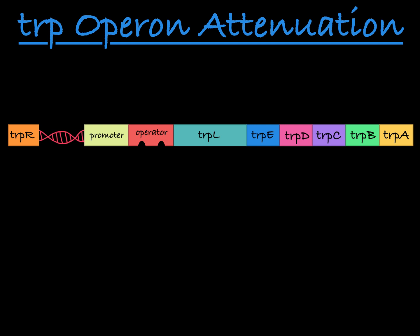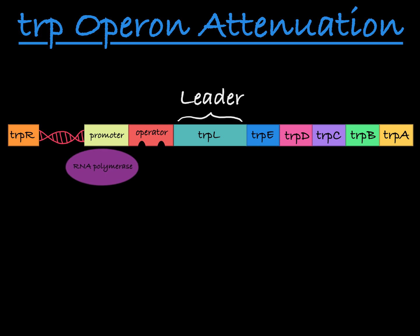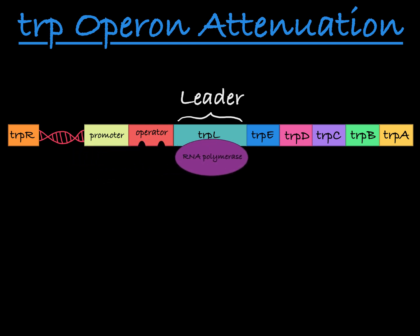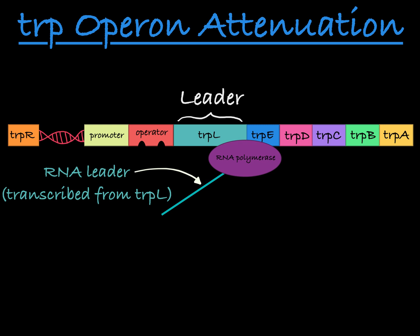The whole process of attenuation has to do with the sequence between the operator and the structural genes, which is called the leader. When RNA polymerase binds to the promoter of the operon, the first thing transcribed is the RNA leader. Structural gene expression is controlled by this RNA leader, which in certain circumstances can cause transcription to be terminated before RNA polymerase reaches the structural genes.